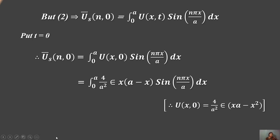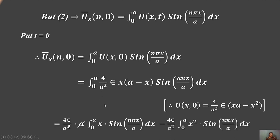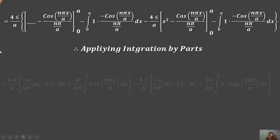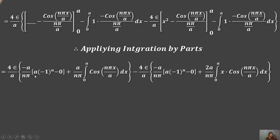Expanding: C₁ = (4ε/a²)·∫₀ᵃ x(a−x)·sin(nπx/a) dx = (4ε/a²)·[∫₀ᵃ ax·sin(nπx/a) dx − ∫₀ᵃ x²·sin(nπx/a) dx]. Applying integration by parts to the first integral gives: (4ε/a)·[−(a/nπ)·(−1)ⁿ + (a/nπ)·∫₀ᵃ cos(nπx/a) dx].